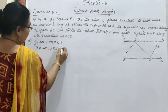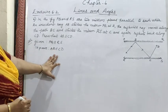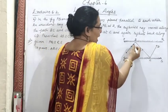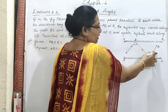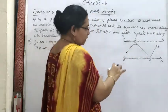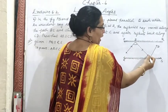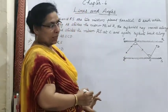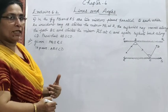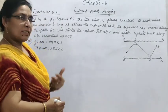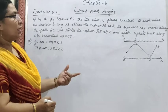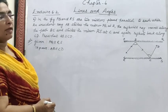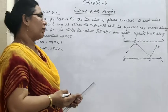To prove AB parallel to CD, we need angle ABC equal to angle BCD — because if alternate interior angles are equal, the lines are parallel. So we should get angle ABC equal to angle BCD. To do this, we draw perpendiculars — normals — at the striking points B and C.